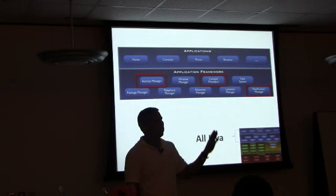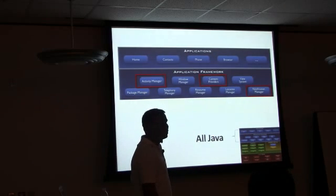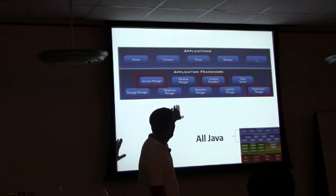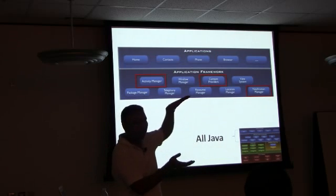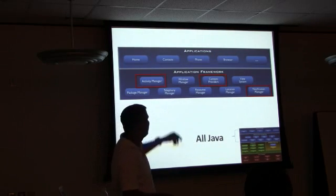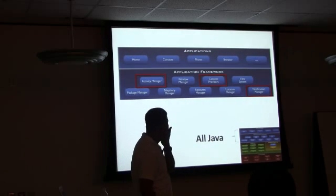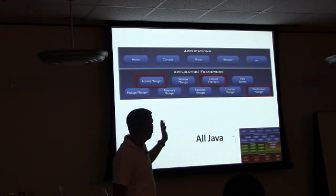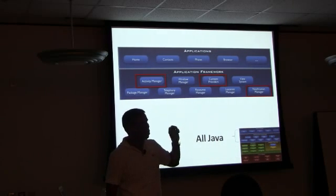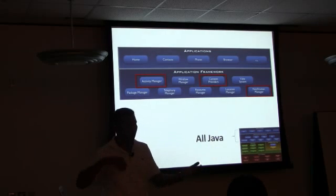The Window Manager is essentially an abstraction on top of the Surface Manager. It decides how to draw and how things look — all responsibility for the screen goes to the Window Manager. The View System is different from the Window Manager but is responsible for drawing different views — different buttons, lists, maps — most of those UI elements are handled by the View System.